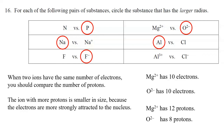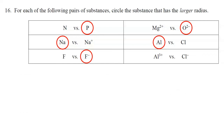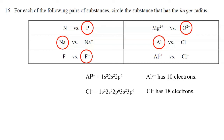In the final comparison, Al³⁺ has 13 electrons but lost 3, giving 10 electrons; Cl⁻ had 17 electrons but gained 1, giving 18 electrons. The electron configuration shows Al³⁺ stops at the second energy level (2p⁶), whereas Cl⁻ stops at the third energy level (3p⁶). Since electrons at the third energy level are farther from the nucleus, Cl⁻ is larger in size than Al³⁺.